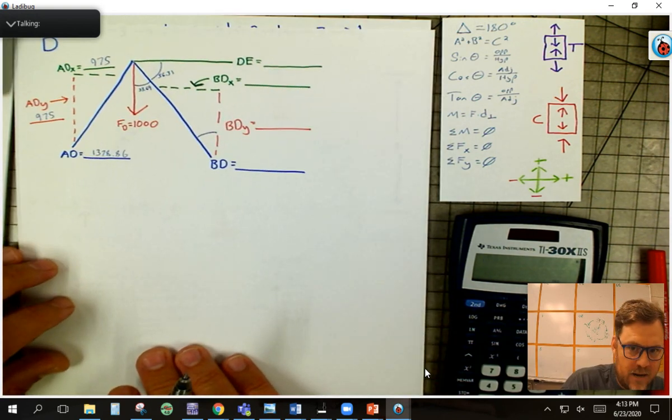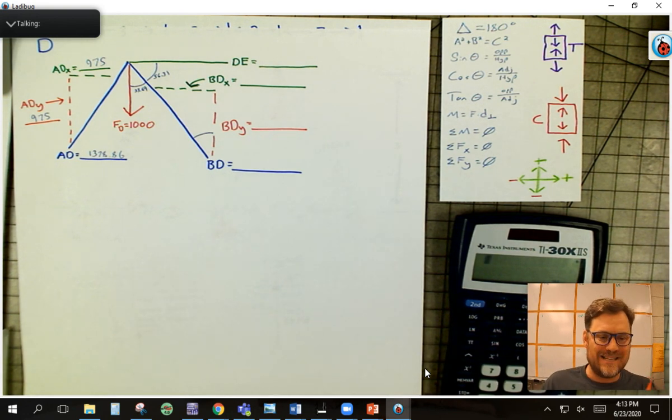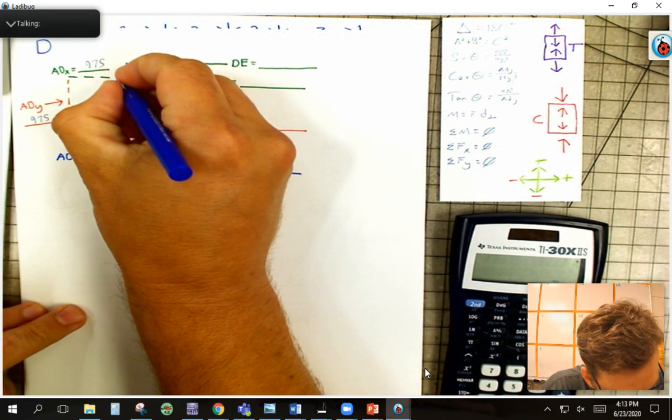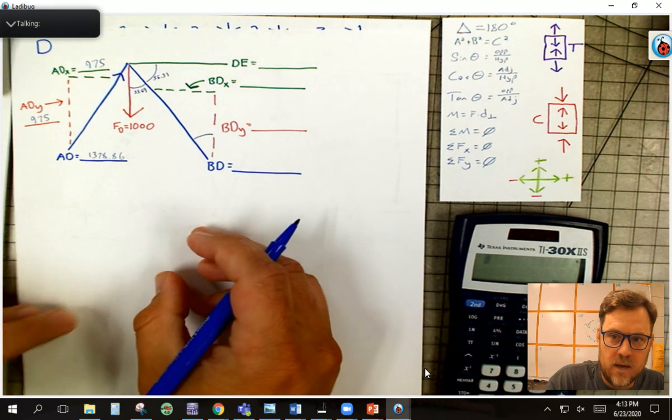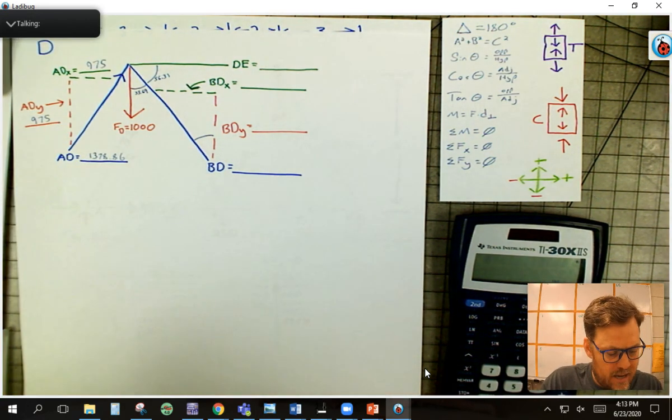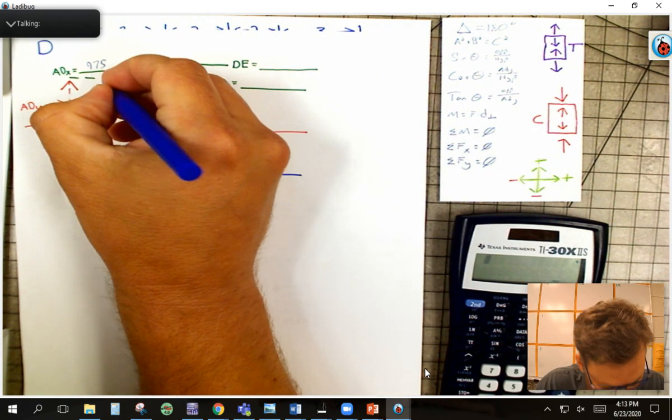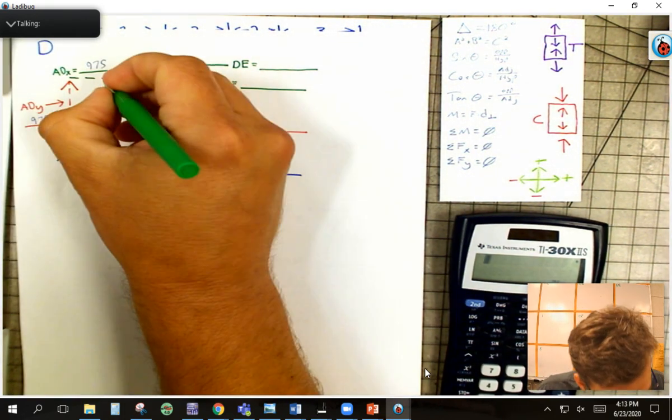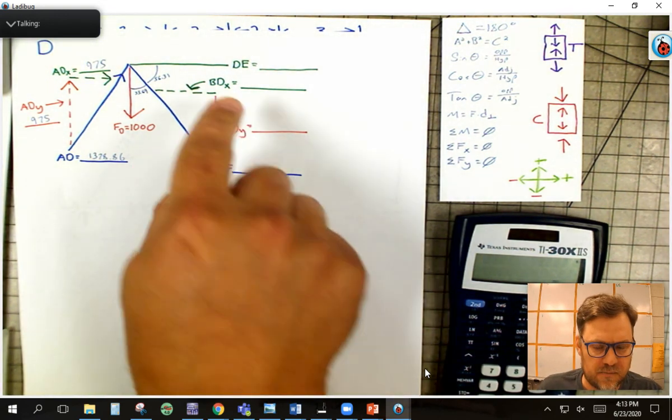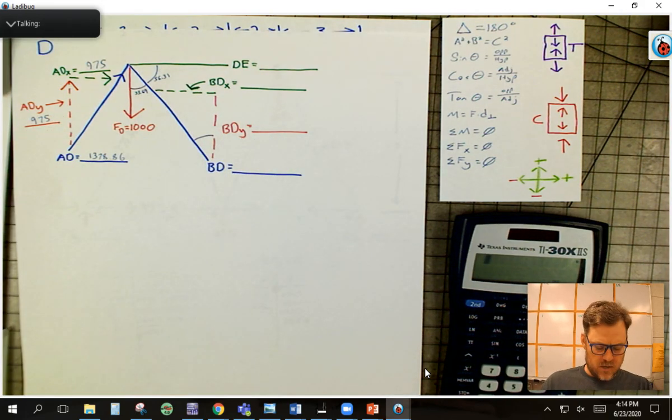So coming in here at D, I know right away the sense of line segment AD at joint D is up and to the right. Let me do that in this color, so I know that guy is going this way, which means that this one, ADY, has to be going up here, and ADX has to be going to the right here. Now, that is in fact not the same as A, but that's why this is called method of joints, because we're looking at this free body diagram here, just joint A.